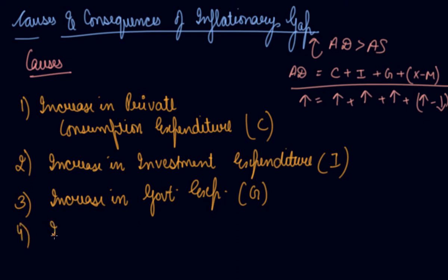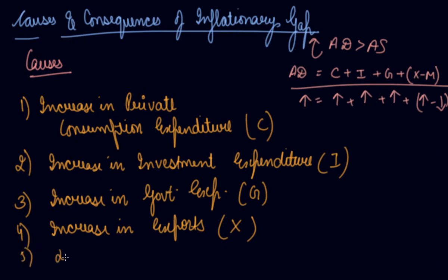Fourth, we have increase in exports, which means in the foreign markets your domestic goods are demanded more. If your domestic goods are demanded more, it ultimately increases your aggregate demand in the economy. Fifth, decrease in imports — foreign goods are demanded less, and your domestic goods are demanded more in the economy, which again increases the aggregate demand.